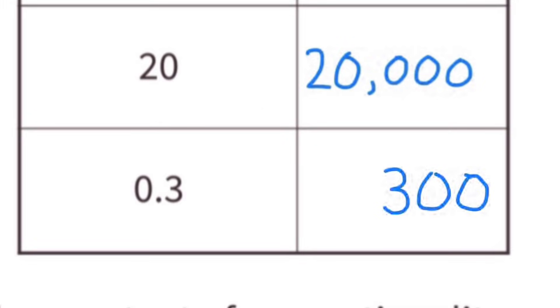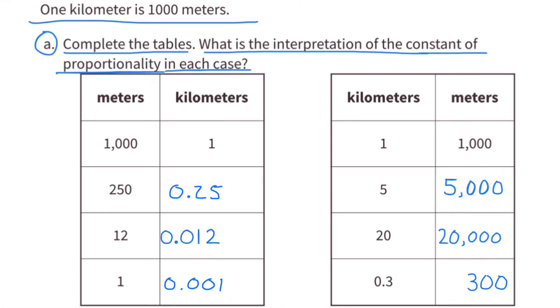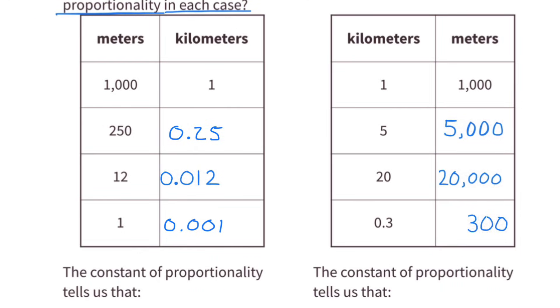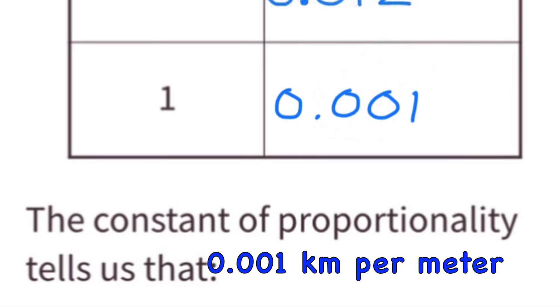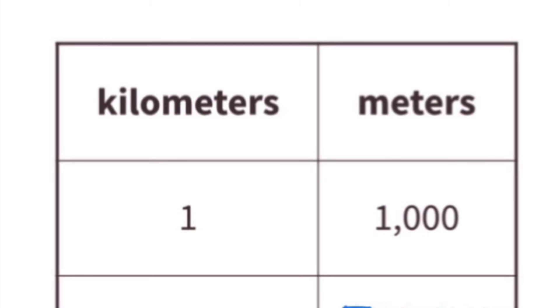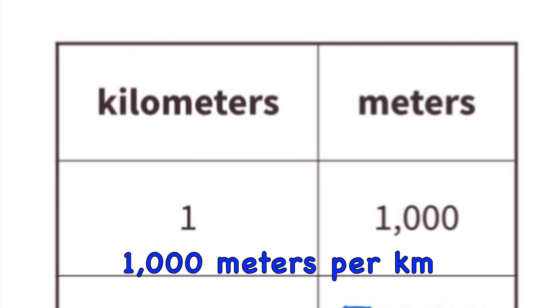3 tenths of a kilometer would equal how many meters? 3 tenths times 1,000 is 300. So for every 3 tenths of a kilometer, you would have 300 meters. The constant of proportionality tells us that for the left table, the constant of proportionality is 1,000th of a kilometer per meter. For the right table, the constant of proportionality is 1,000 meters per kilometer.